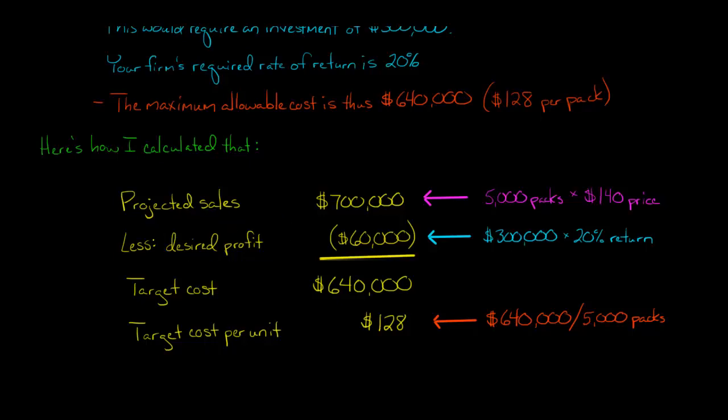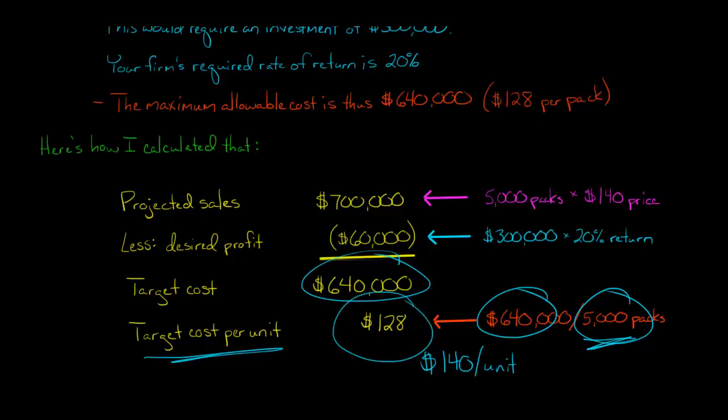If the cost comes in at $690,000 or something like that, we're not going to achieve a $60,000 profit. Here's another way of thinking about it instead of just thinking $640,000. We're going to sell 5,000 packs. If you divide the $640,000 total cost by 5,000, you get the target cost on a per unit basis, which is $128. So let me tie all this together. We're going to sell this pack for $140 a unit. We need to design this backpack in such a way that it does not cost more than $128 per backpack to make in order to achieve our desired return, our desired level of profit.